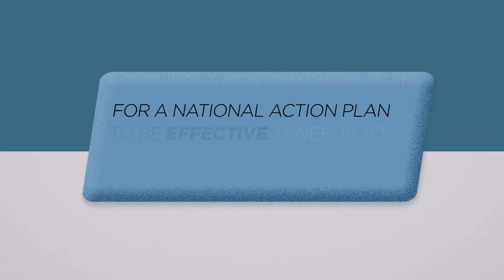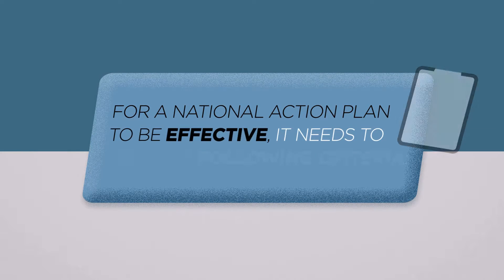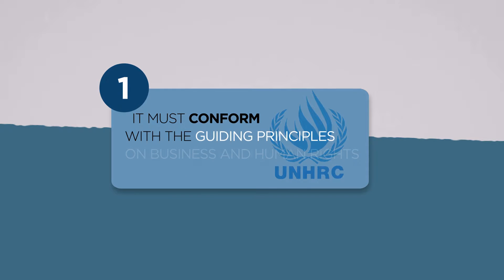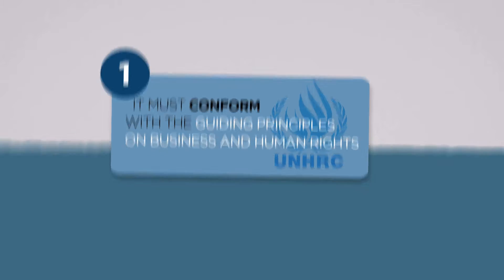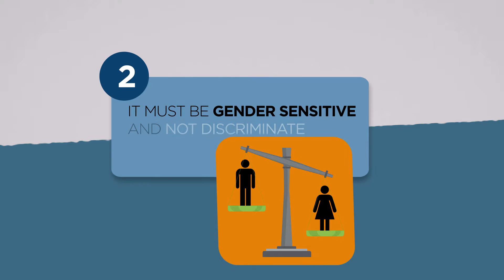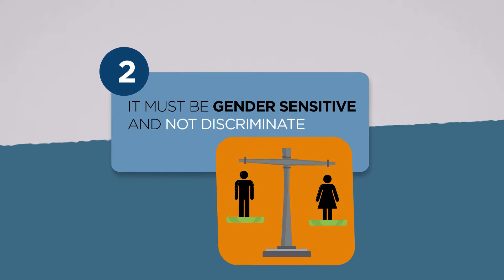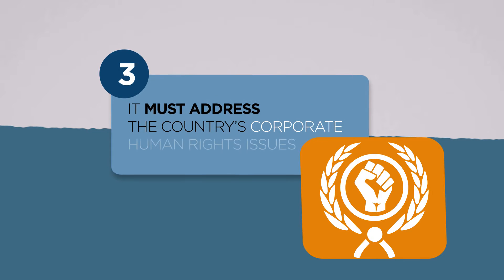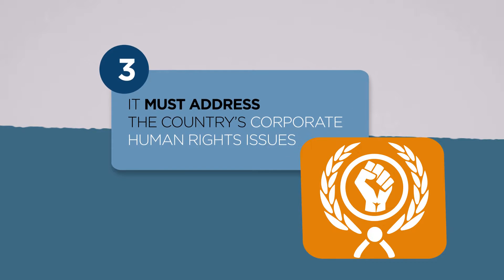For a National Action Plan to be effective, it needs to meet the following criteria. It must conform with the guiding principles of business and human rights. It must be gender sensitive and not discriminate. It must address the country's corporate human rights issues.